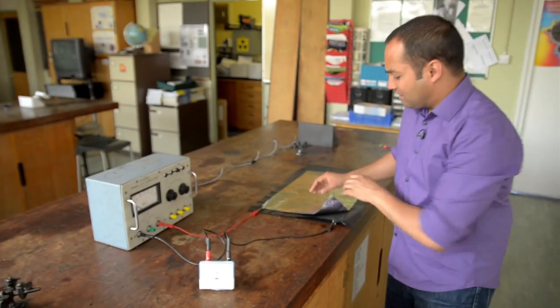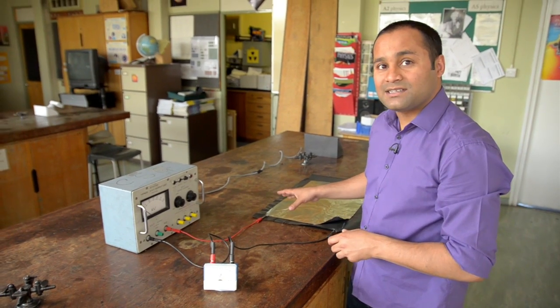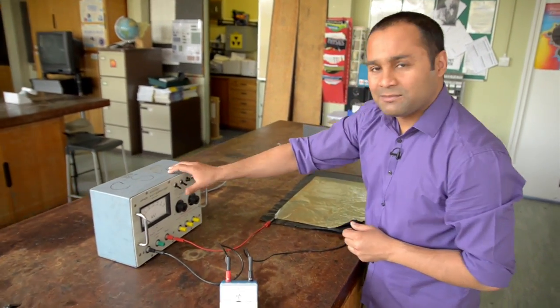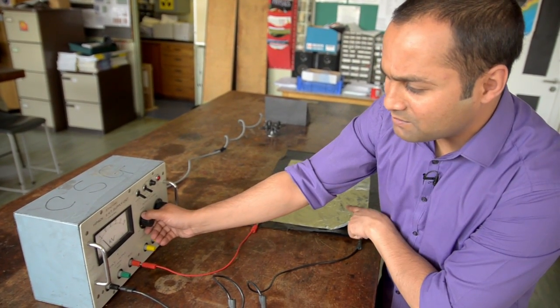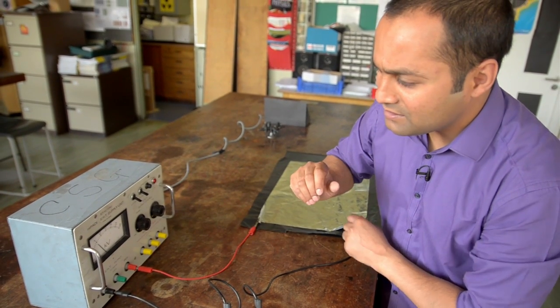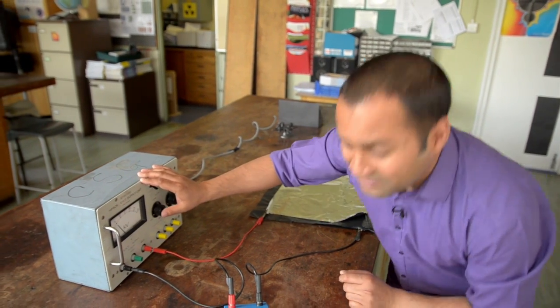Now, before you use this in class, it's important to determine the maximum voltage the capacitor can take before it breaks down. And we do this by turning the power supply on and gradually increasing the voltage until you hear these sparks, and then turning the voltage down until just before the sparks start. And here I'm using about 900 volts.